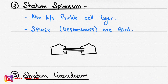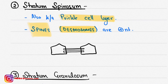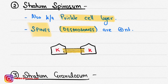The next layer is stratum spinosum, also known as the prickle cell layer. It has spines, also known as desmosomes. Desmosomes are calcium-dependent adherent protein molecules that connect adjacent keratinocytes to maintain normal anatomy. Types include desmoglein, desmocollin, desmoplakin, plakoglobin, and plakophyllin.